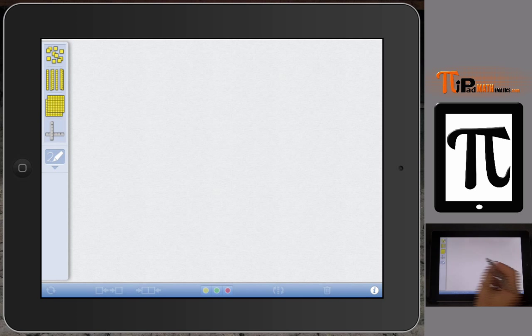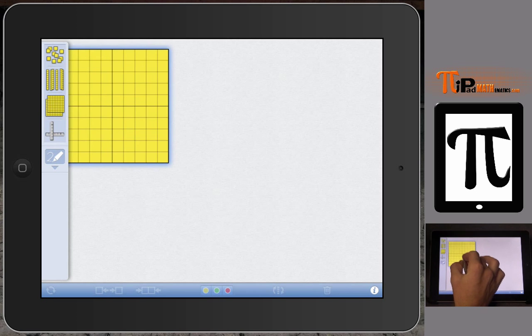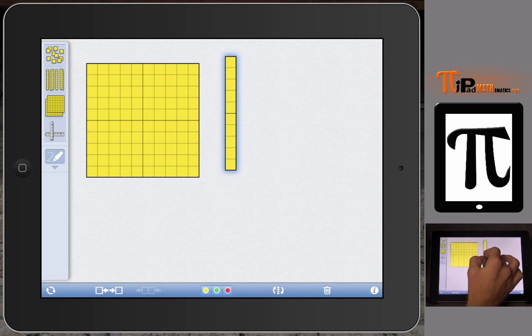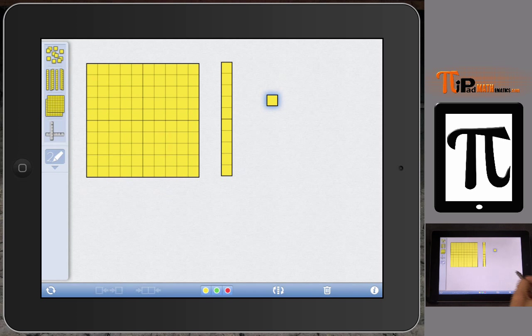So we have base 10 blocks where we have three specific blocks that help represent or model the numbers that we are talking about or that we are trying to learn at an early age. We make this smallest unit we call it a unit, some people call it the ones.